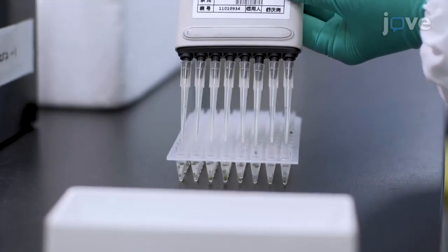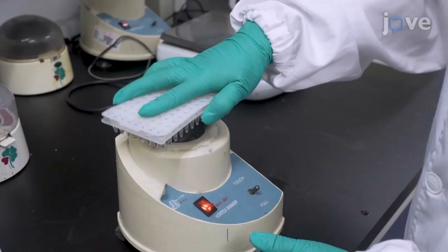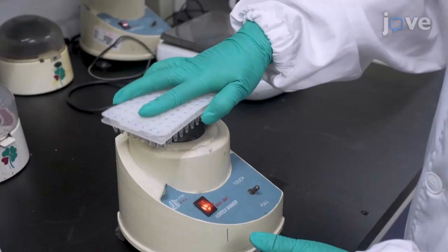Add 50 microliters of buffer B to each well and mix well by vortexing. Centrifuge the plate for one minute at 1500 times G. Collect the supernatant as DNA for PCR.